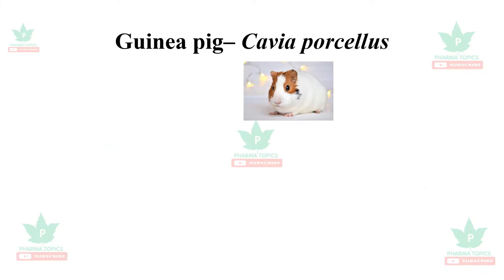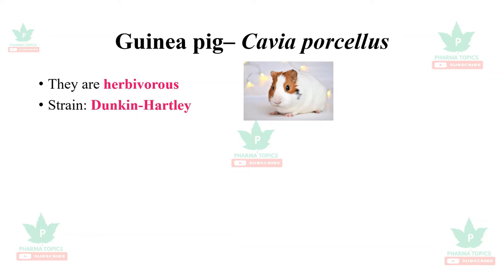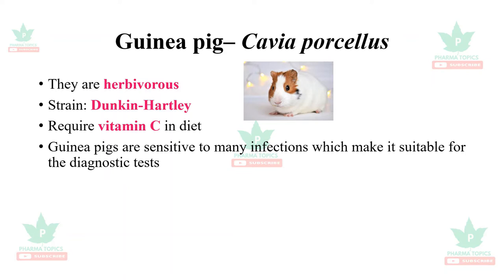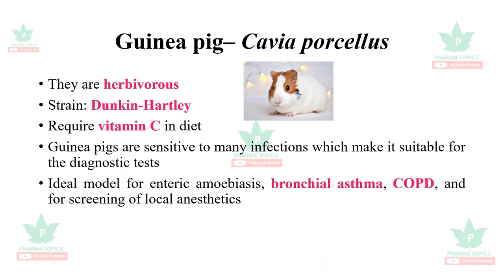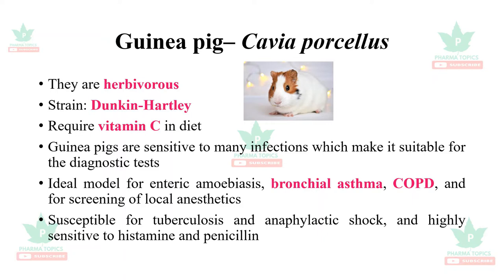The guinea pig, Cavia porcellus, is herbivorous. The common strain is Dunkin Hartley. Guinea pigs require vitamin C in their diet and are sensitive to many infections, making them suitable for diagnostic tests. They are ideal models for enteric amoebiasis, bronchial asthma, COPD, and screening of local anesthetics. They are susceptible to tuberculosis and anaphylactic shock and are highly sensitive to histamine and penicillin.